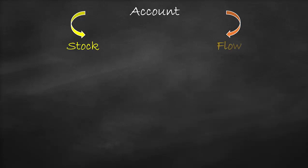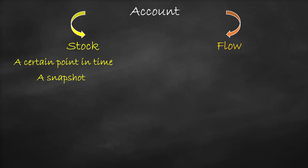We have two types of accounts. First, we have the stock account, and second, we have the flow account. The stock account is measured at a certain point in time; therefore, it refers to a snapshot in time. The flow account, on the other hand, is measured over a period of time; therefore, it refers to an interval in time.